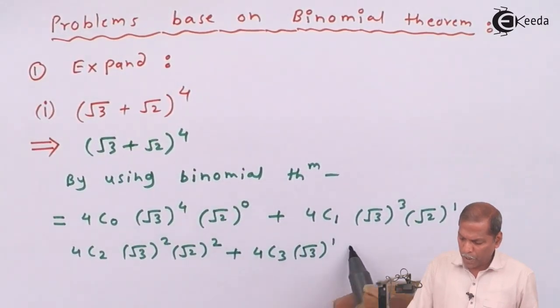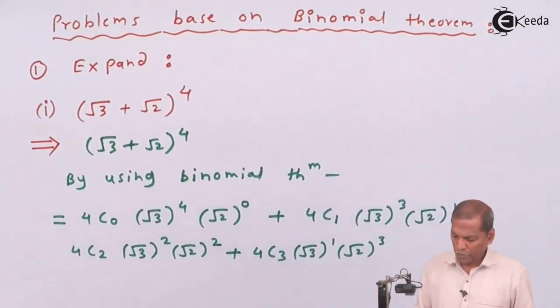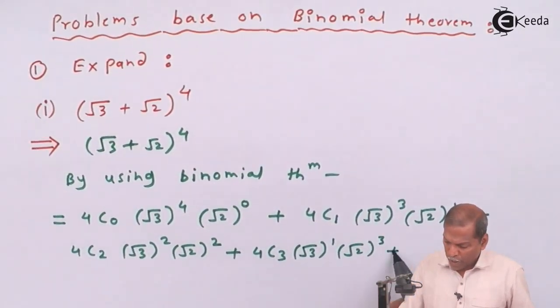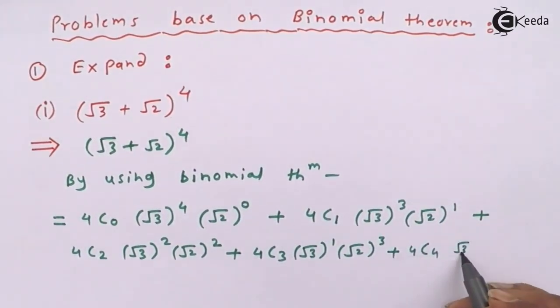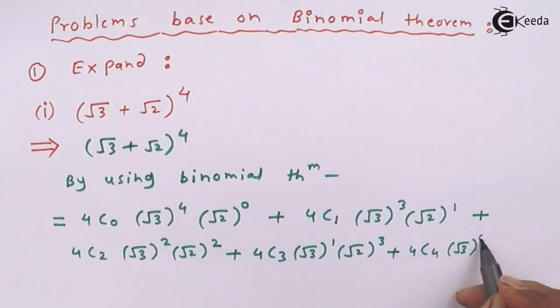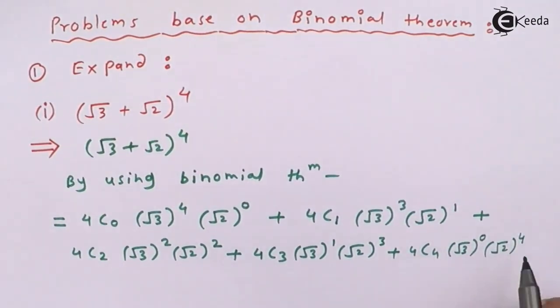Plus 4C3 root 3 bracket raised 1 into root 2 bracket raised 3 plus 4C4 root 2 bracket raised 4.